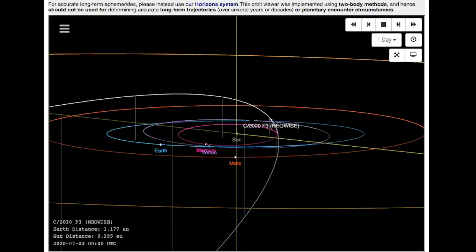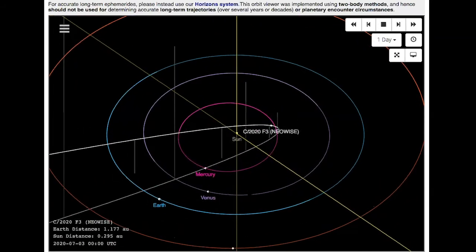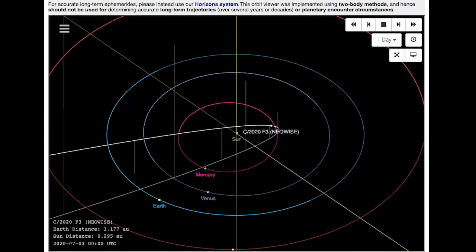You can see it got really close to the sun indeed. It's crossing about as close to the sun as the orbit of Mercury, so quite close.